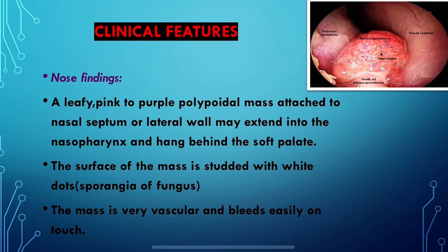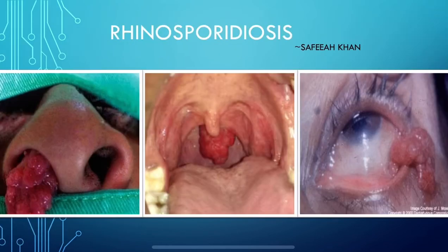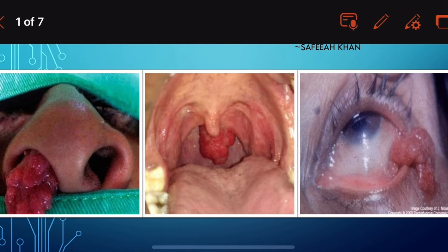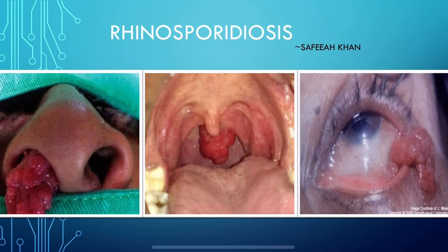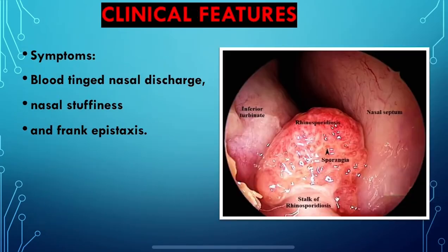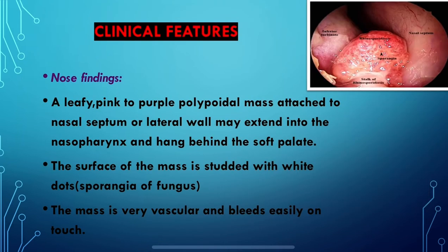Looking at the nasal findings, there is a leafy pink to purple polypoidal mass attached to the nasal septum or the lateral wall of the nose. It extends into the nasopharynx and hangs behind the soft palate.